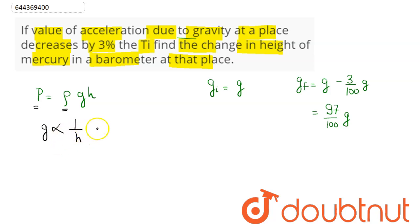We can see the ratio of acceleration due to gravity, g_i divided by g_f, can be written as h_f divided by h_i.